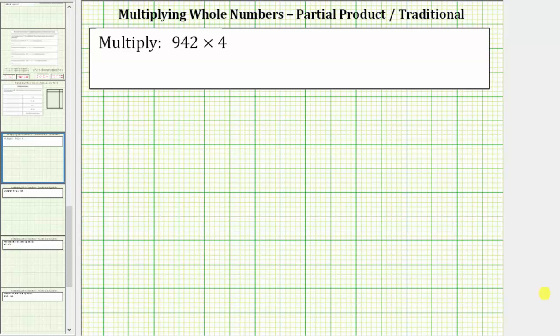We want to determine 942 times four. For the first step, let's write the product vertically, lining up the corresponding place values. So we have 942 times four.